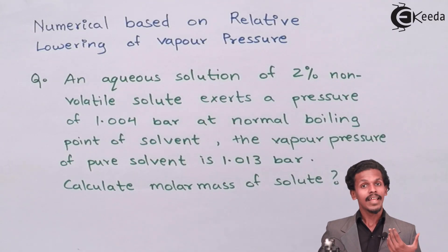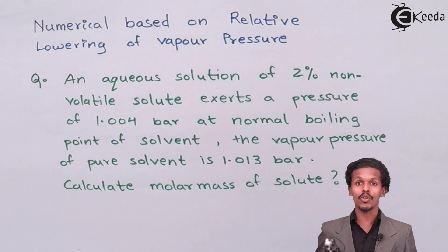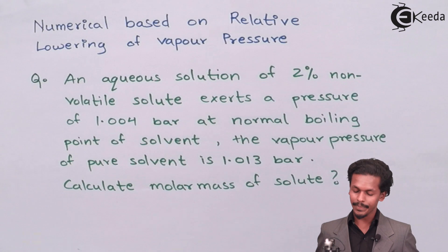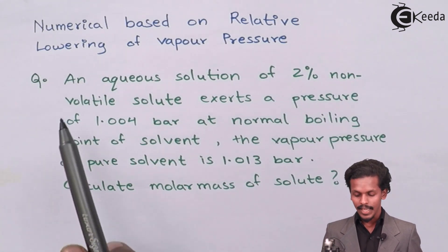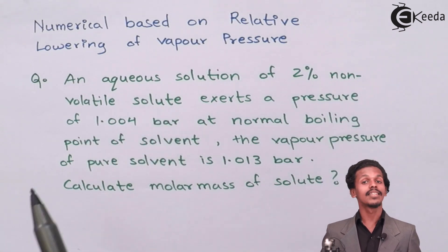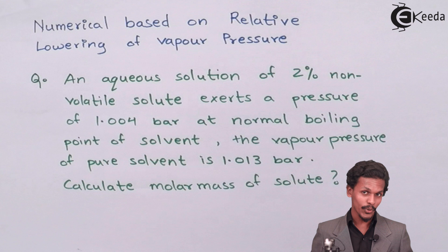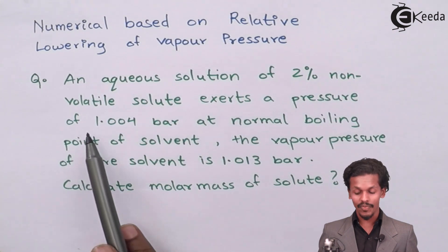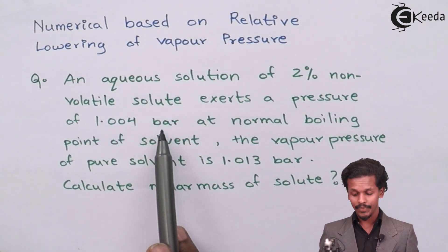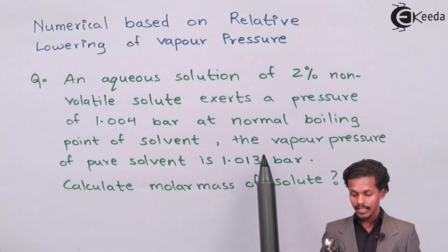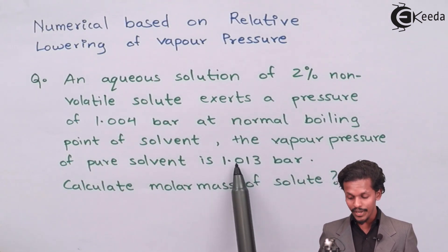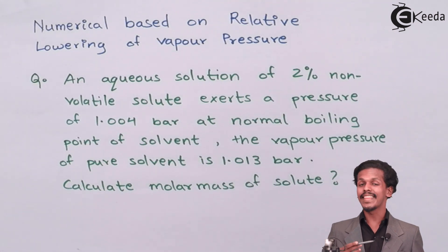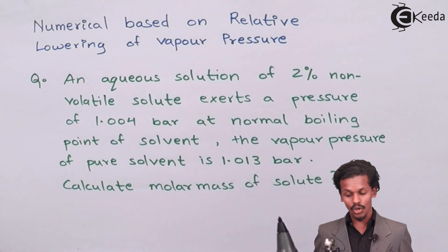On your screen as you can see there is a numerical which is based on relative lowering of vapor pressure to calculate the molar mass of solute. So let us see the question very deeply and precisely. In the question an aqueous solution of 2% non-volatile solute exerts a pressure of 1.004 bar at normal boiling point of solvent. The vapor pressure of pure solvent is 1.013 bar. So on that basis we have to calculate the molar mass of solute.